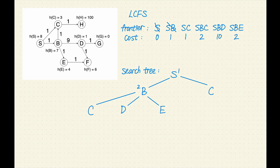Next, Sc has the lowest cost of 1. Let's remove Sc from the frontier. C is not a goal, let's expand it. C has one successor, H. Let's add Sch to the frontier with a cost of 2.